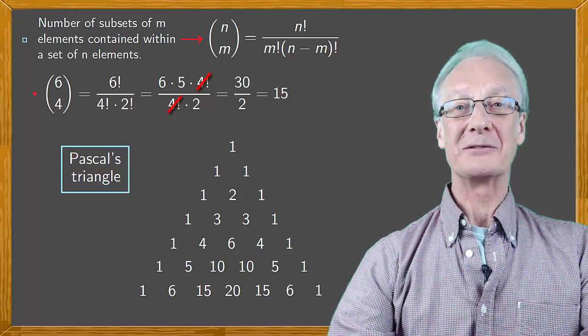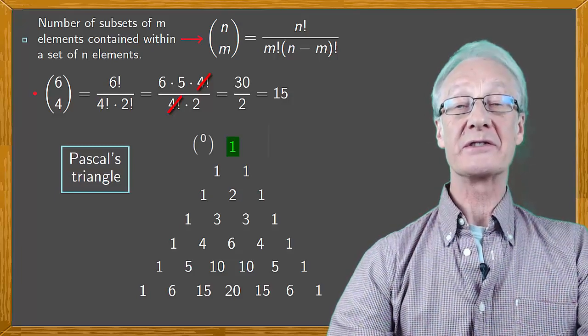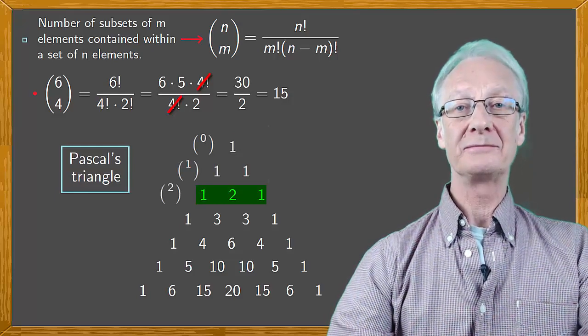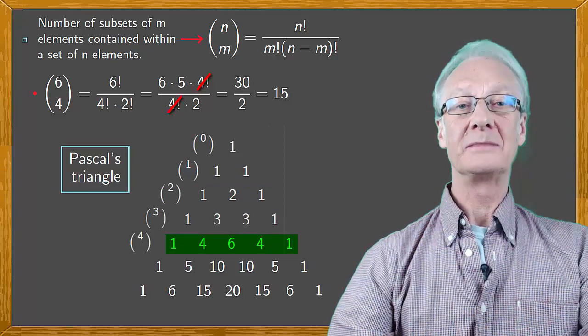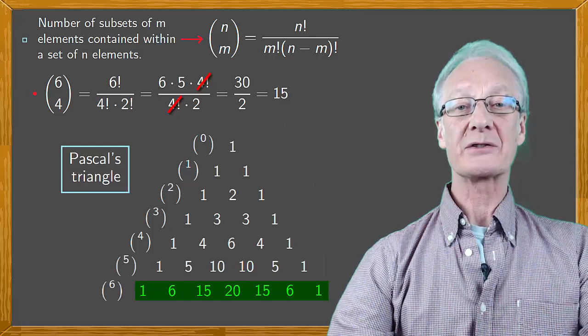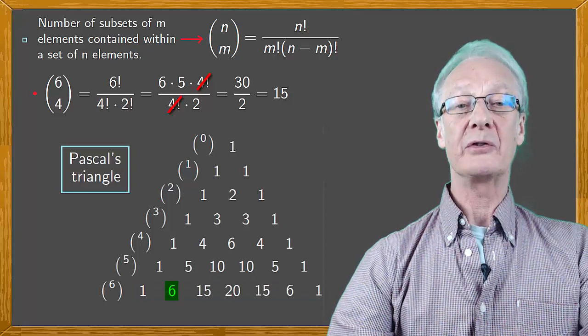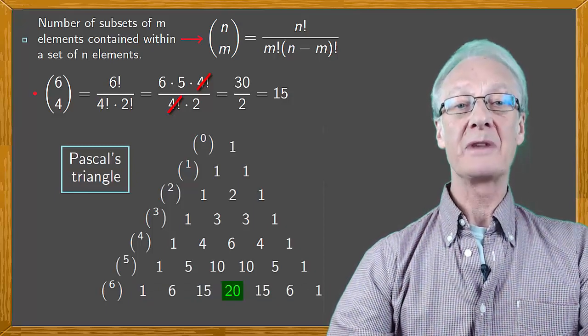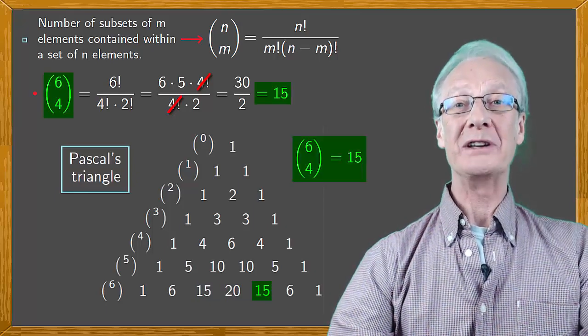In terms of combinations, the first row represents zero over, the next one over, the next two over, the next three over, four over, and five over. The next row represents six over, and moving along it, we have six over zero, six over one, six over two, six over three, and six over four, which is fifteen, as we already knew.